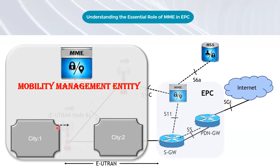As a user moves through the network, their device must constantly communicate with the MME, providing information about its location, status, and capabilities. The MME uses this information to manage the user's connection, directing traffic to the appropriate network elements, and ensuring that the user stays connected even as they move across different areas of the network.